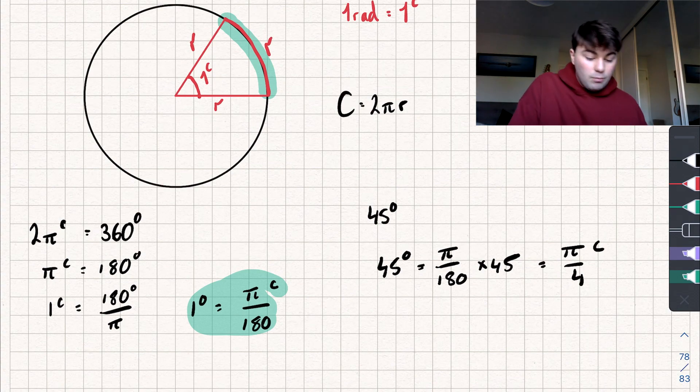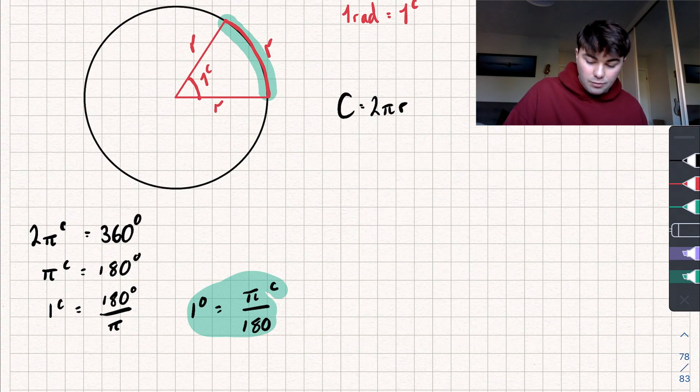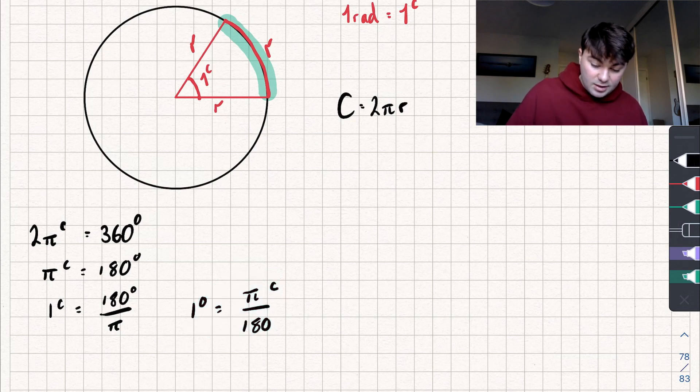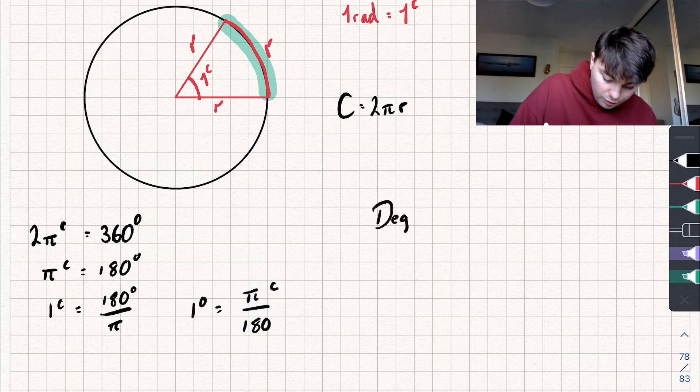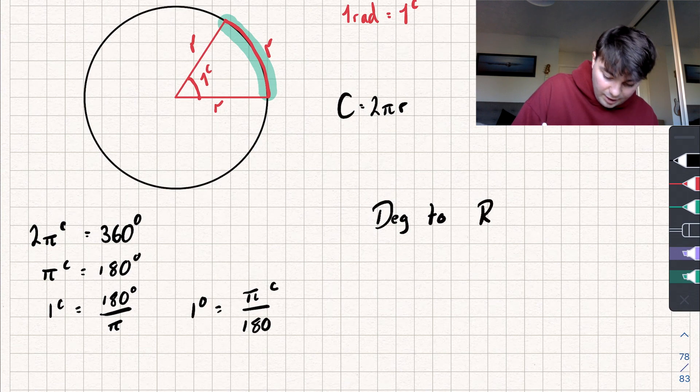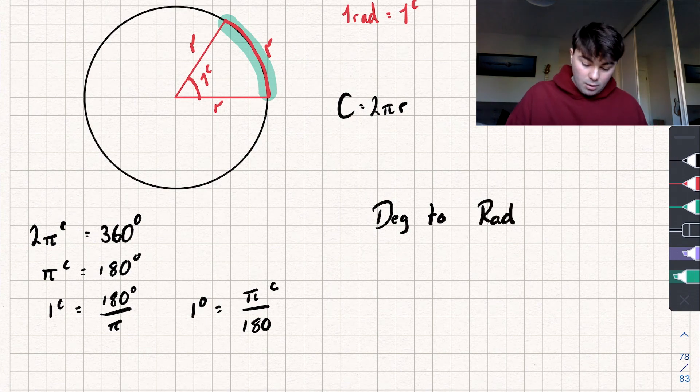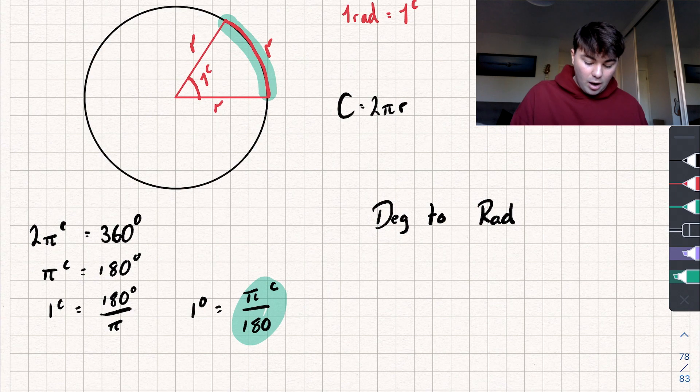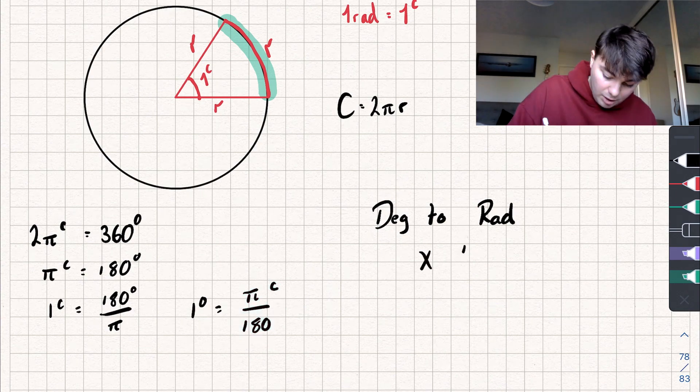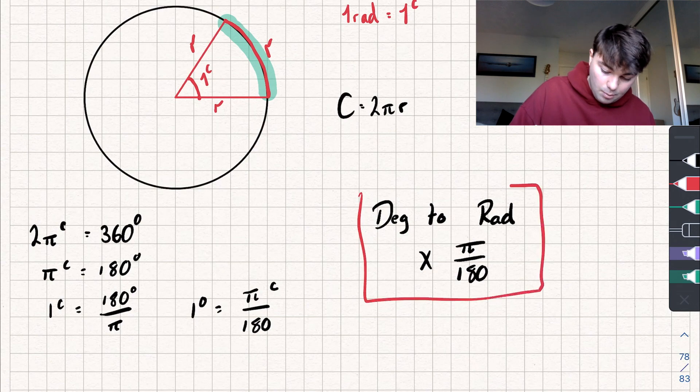We obviously don't want to keep writing all these equalities out every time and converting between the two, so let's just write it a bit easier. If we want to go from degrees to radians, all we have to do is multiply whatever the amount of degrees is by π by 180. So multiply by π over 180.